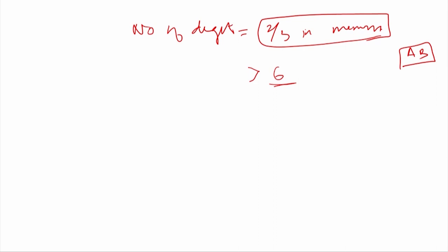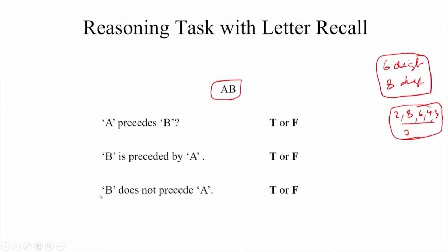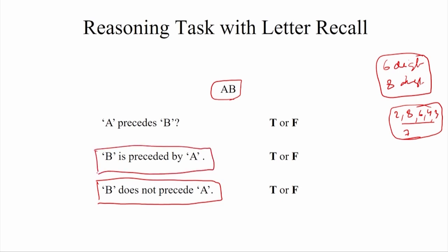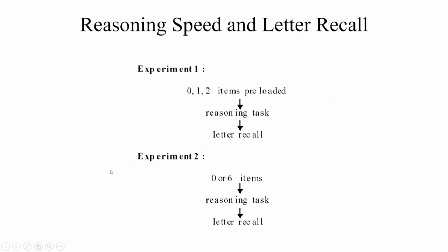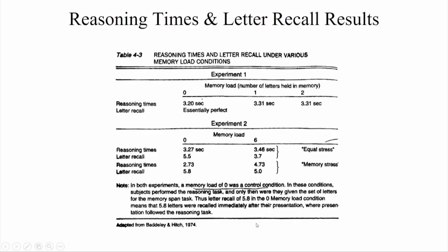It was also found that if a negative or passive sentence was used — such as 'B does not precede A' — performance on the verification task was lower. So in experiment 1, one to three items were preloaded, a reasoning task was done, and a letter recall task was done. In experiment 2, zero to six items were given, a reasoning task was done, and a letter recall task was done.